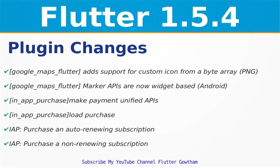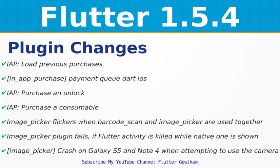In-app purchase: make payment with unified APIs. In-app purchase: load purchase. IAP purchase an auto-renewing subscription. IAP purchase a non-renewing subscription. IAP: load previous purchases. In-app purchase payment queue Dart. iOS IAP: purchase and unlock IAP. Purchase a consumable.